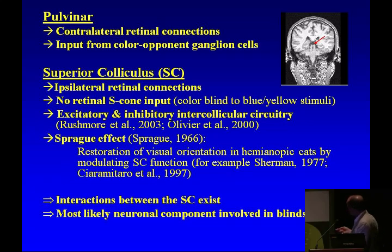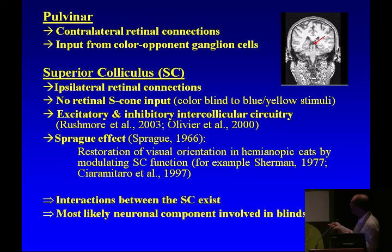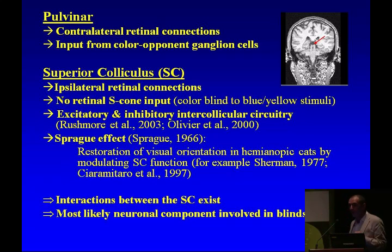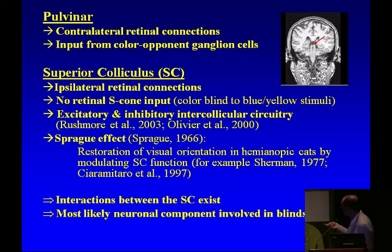As a preamble: in the pulvinar, there are contralateral retinal connections and input from color opponent ganglion cells, so pulvinar cells are sensitive to color. In the superior colliculus, there are ipsilateral connections and no retinal S-cone inputs, meaning they are colorblind to blue-yellow stimuli. And there is the Sprague effect — restoration of visual orientation in hemianopic cats by modulating superior collicular function. If you cut the connection between the two superior collicula, you can reinstate vision in the cat's blind field.